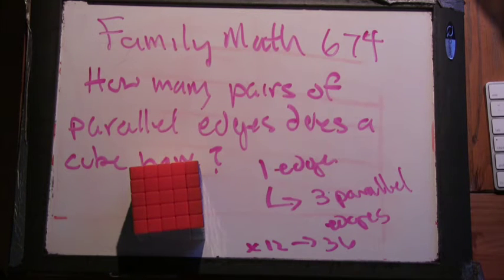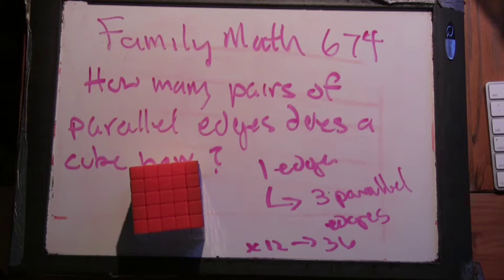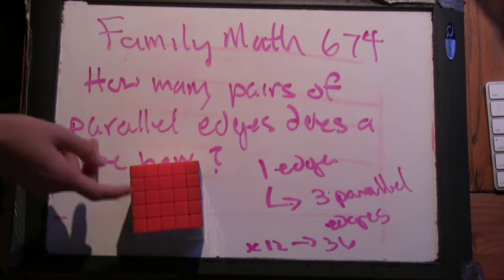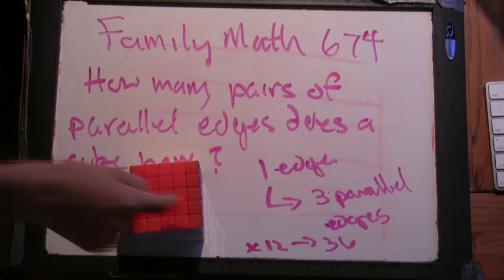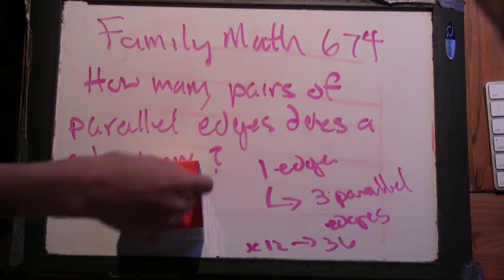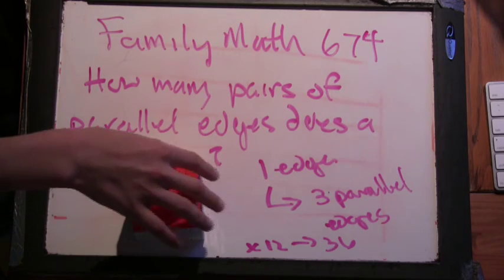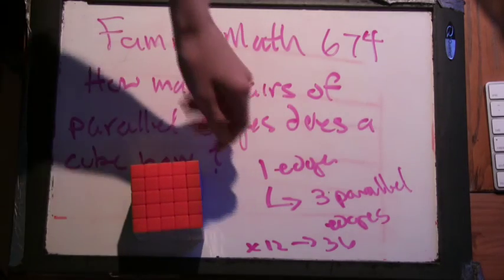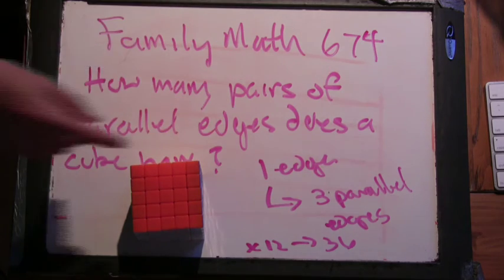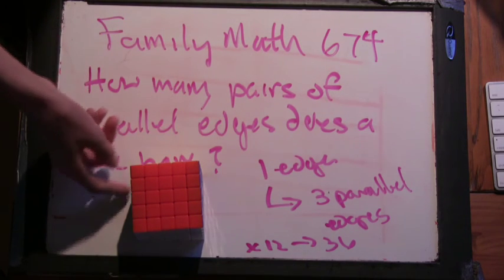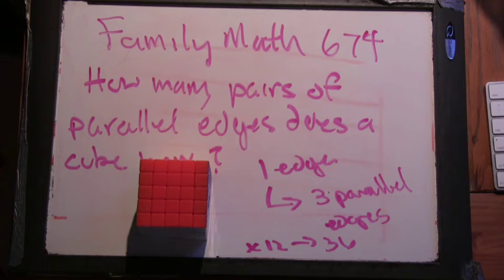And we have to figure out what to divide by for the over-counting. So let's take this edge here. This edge is counted once from this pair, another time from this pair, and then another time from this pair. So it's three times. We have to divide by three. So it gets us to 12 parallel edges.